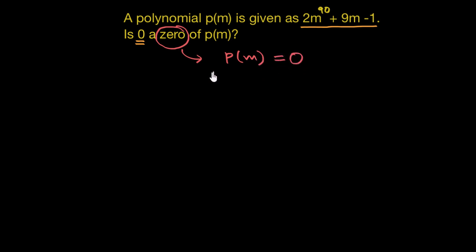So what we need to find is: can this number 0 act as the zero of p(m)? This number 0 can only act as zero of p(m).